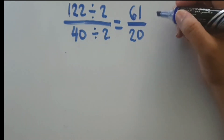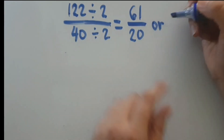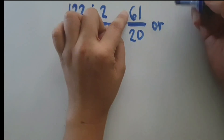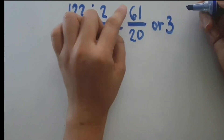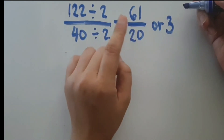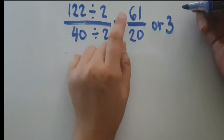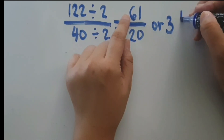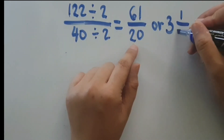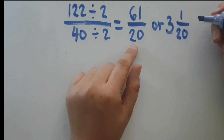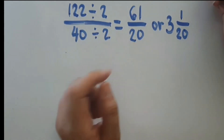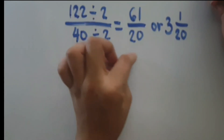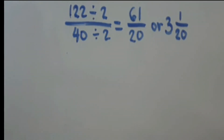Now write this as a mixed number. How many 20s can you take from 61? There are 3. Three 20s is equal to 60, and taking away 60 from 61 will leave us 1. Copy the same denominator. So our expression is equal to 61 over 20, or 3 and 1 over 20.